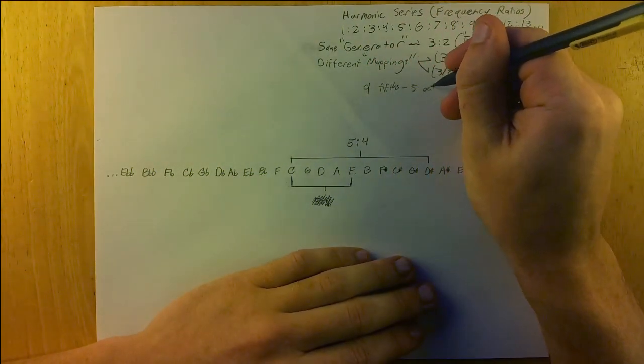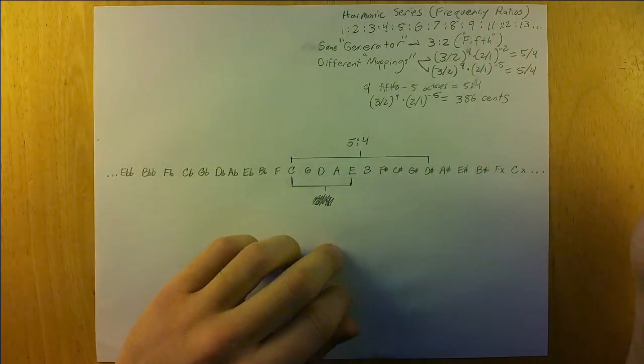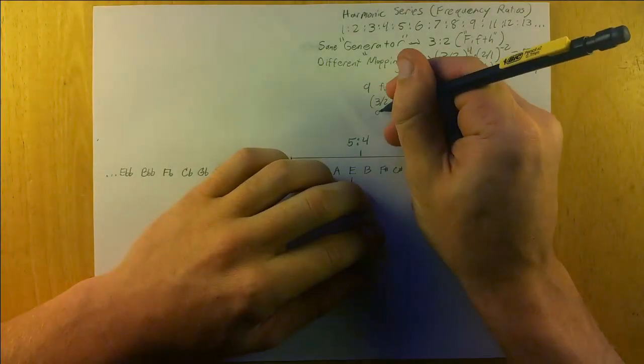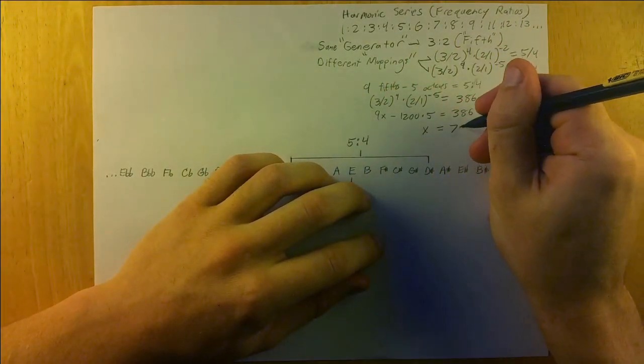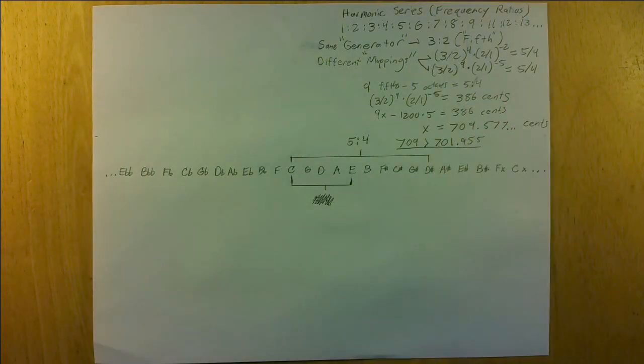This Super-Pythagorean mapping is most accurate—that is, the augmented second gets close to a five to four frequency ratio—when the generator is tuned sharper than the pure 701.955 cent fifths of Pythagorean tuning, hence the name Super-Pythagorean.